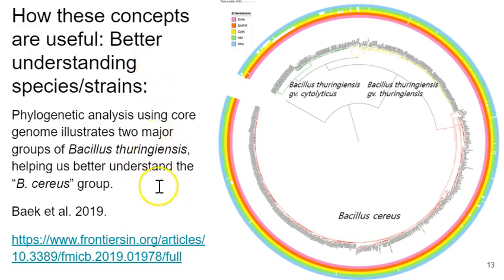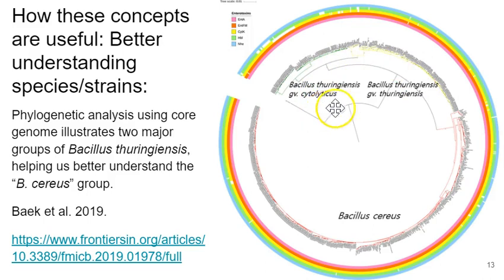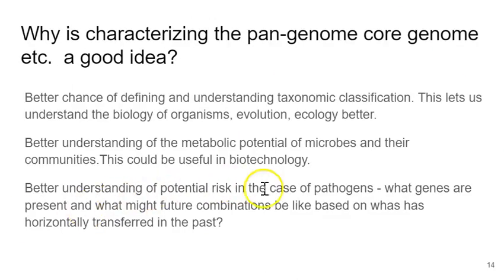All of this put together allows us to better understand species or strains within species, and can be very useful in describing and classifying organisms. As a recent 2019 study by Beck et al. showed, they were able to look at the organism Bacillus thuringiensis — the source of BT toxin used in many genetically modified crops, belonging to the Bacillus cereus group — and found that you can actually split the BT organisms into two distinct taxonomic affiliations. By doing that, we can better understand the biology, evolution, and ecology of Bacillus thuringiensis, and we couldn't have done that without pan-genomic studies.